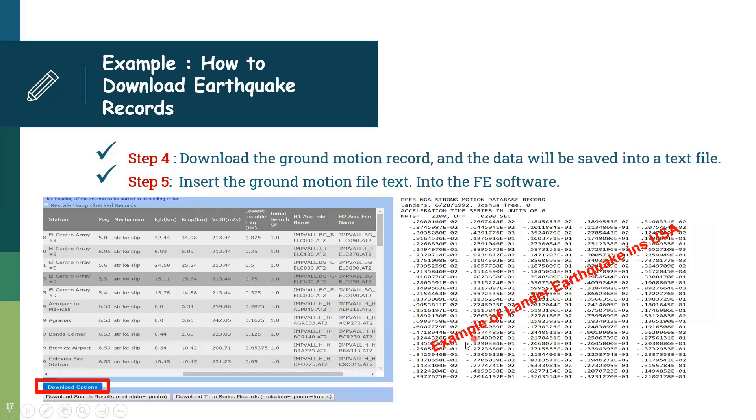This is a text file. This is an example of Flanders earthquake in the United States. It has several points, 2,200 points. We have 0.02 seconds, the interval between each point. So this happened in 1992. This is all the database you need to use in your simulation process.